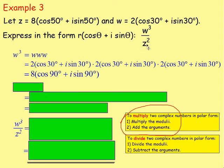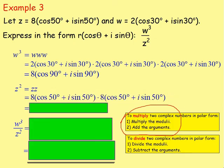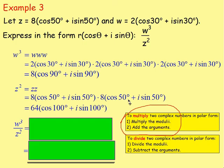We also need Z squared, which is Z times Z. Z is 8(cos 50 + I sine 50) multiplied by itself. When multiplying, multiply the moduli: 8 times 8 gives 64. Add the arguments: cos 50 and cos 50 gives cos 100, and I sine 100. So Z squared equals 64(cos 100 + I sine 100).